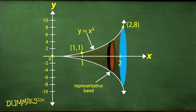Try one. What's the surface area between x equals 1 and x equals 2 of the surface generated by revolving y equals x³ around the x-axis?